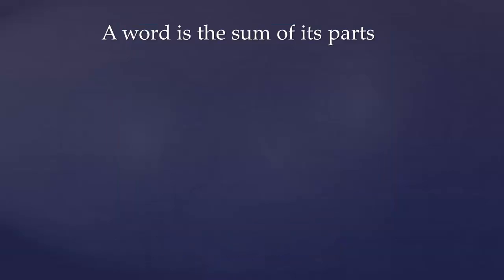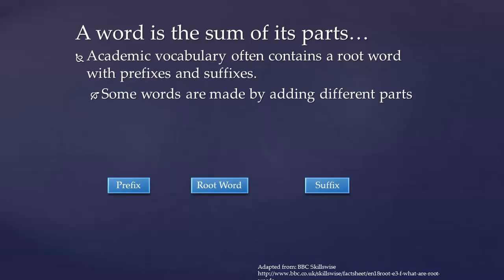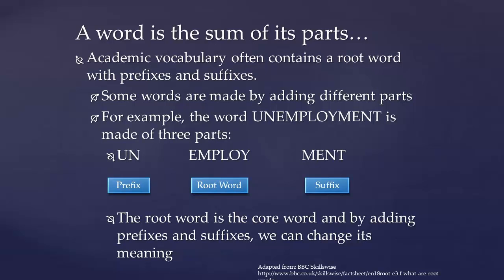Another helpful hint to improving your academic vocabulary is to think of a word as the sum of its parts. Academic vocabulary often contains a root word with prefixes and suffixes. Take the word unemployment as an example — this word has three parts. The root of the word is employ, which means to give work to someone and pay them for it. By adding a prefix of un and a suffix of ment, we change its meaning. Unemployment means people who are without work, keeping the root word's general meaning as work, but the word has changed.